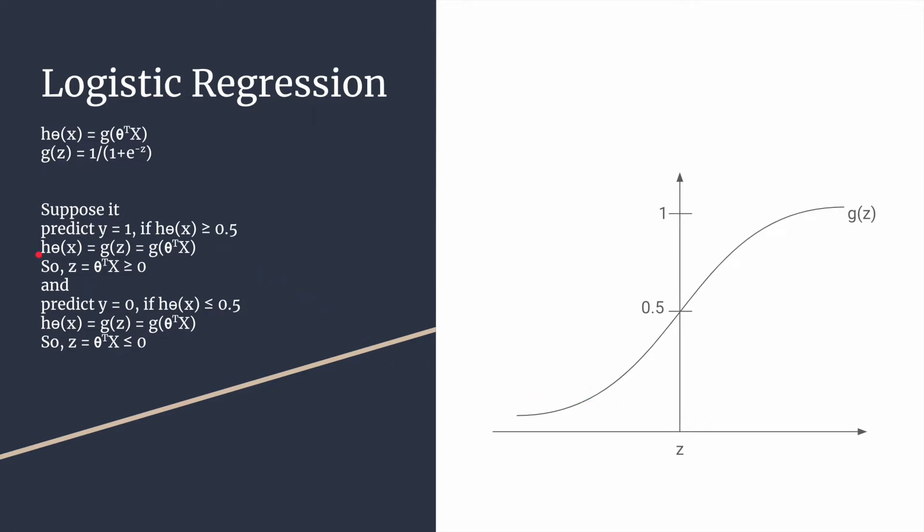That shows us that h of theta x equals g of z and equals g of theta transpose x since z equals theta transpose x. According to that, z equals theta transpose x must be greater than or equal to 0. The inside thing must be greater than or equal to 0 to predict y equals 1. And opposite will be in the case of y equals 0. For that case, z equals theta transpose x. Transpose simply means that if it's a row then it will be converted into a column. The row elements will be converted into a column. Now let's move on.